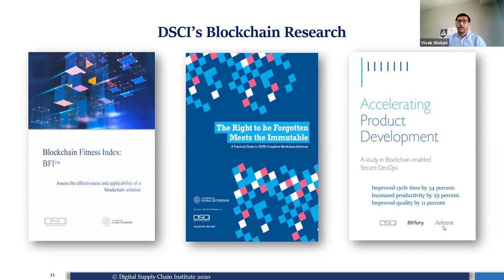For those interested in blockchain, we've written papers available on the DSCI website for download. Our first blockchain proof-of-value project was with a company called Allison. In a study on blockchain-enabled secure DevOps, we improved cycle time by 34%, increased productivity by 29%, and improved product quality by 11%. Unless you identify a real use case, you can't get this kind of KPI improvement. Going through the BFI framework first is essential — invest only after that assessment.